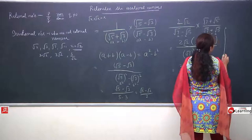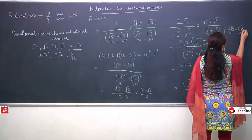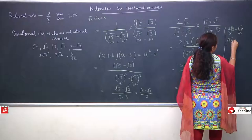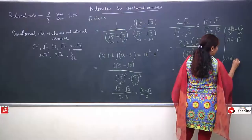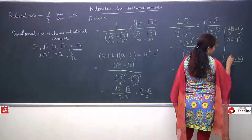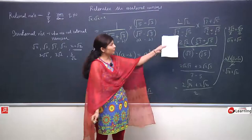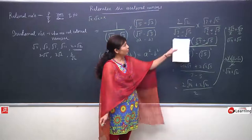We can separate the terms. After this step we can do it two ways: 2 root 14 upon 2 plus 2 root 10 upon 2. The 2's cancel and the final answer will be root 14 plus root 10.